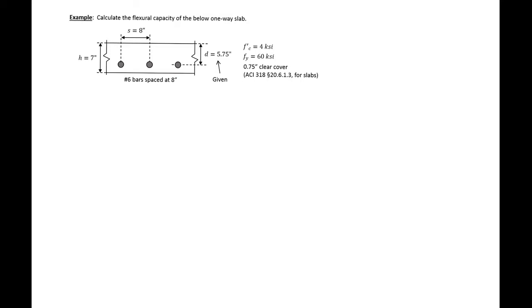In this example we will find the flexural capacity of a one-way slab. We're given our slab section is seven inches deep. We have a spacing of eight inches for our number six bars, and we can remember that our number six bars have an area of 0.44 square inches. We have 4 KSI concrete and 60 KSI steel, and we're given our D.